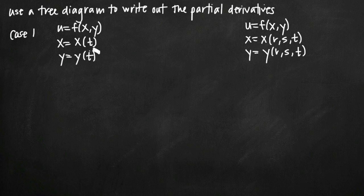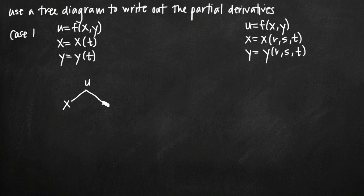It's called Case 1 because there's only one independent variable, and that's t. If we use a tree diagram to outline this, it'll become much clearer. We'll say u is at the top and it's in terms of x and y. No matter how many variables they give you, you can just make your tree larger — if u were in terms of x, y, and z, you could add a third branch.